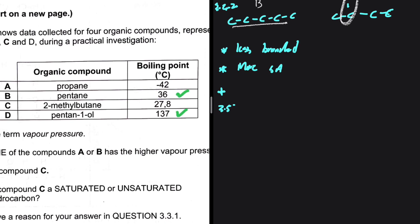Look at the difference in the boiling point, even though they have the same number of carbons. 36 degrees Celsius and 137 degrees Celsius. So why does compound D have a higher boiling point compared to compound B?